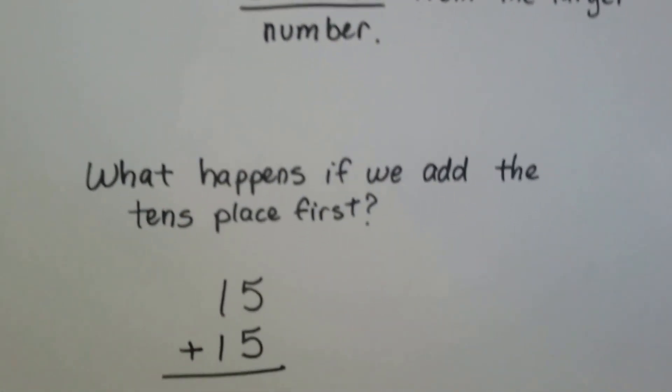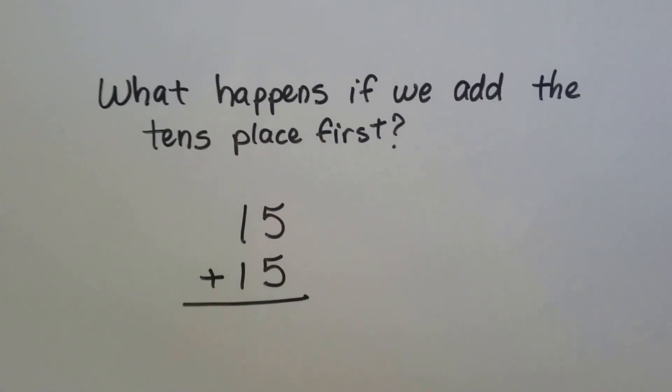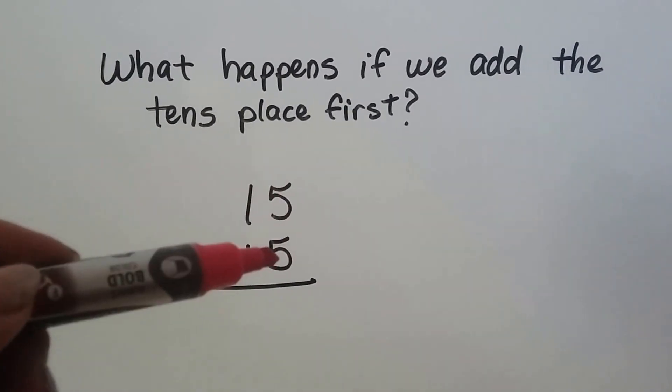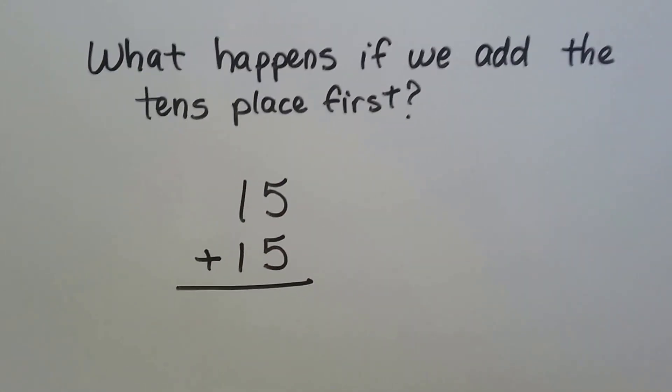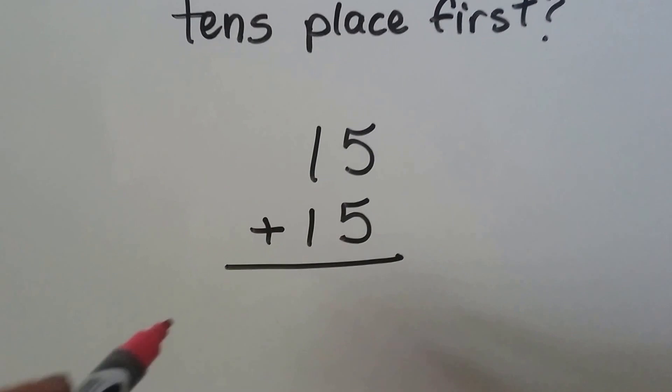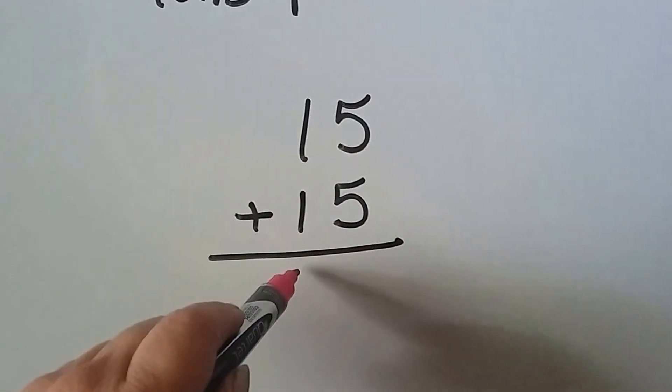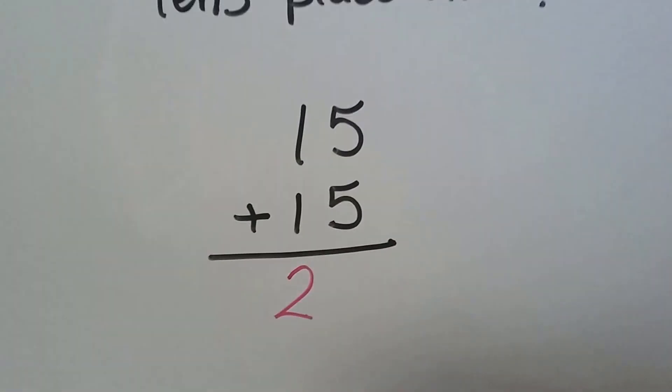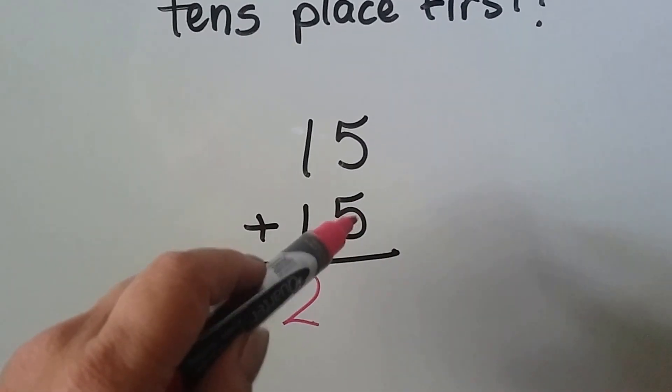Now what happens if we add the tens place first? The rule says that we need to add the ones place first, but what happens if we add the tens place first? Let's see what happens. 1 plus 1 is 2, and 5 plus 5 is 10.